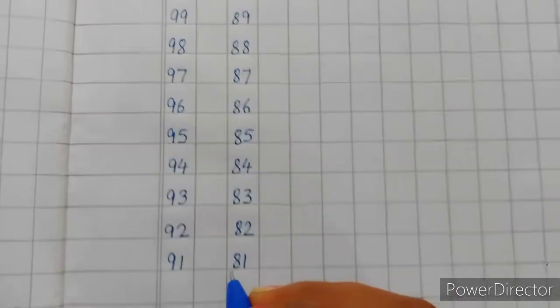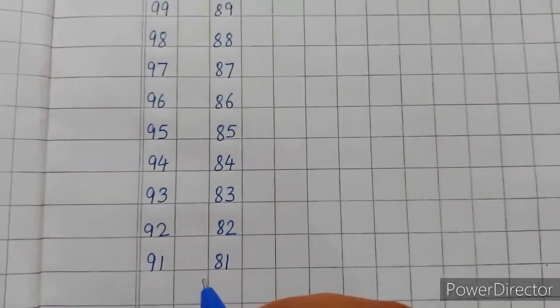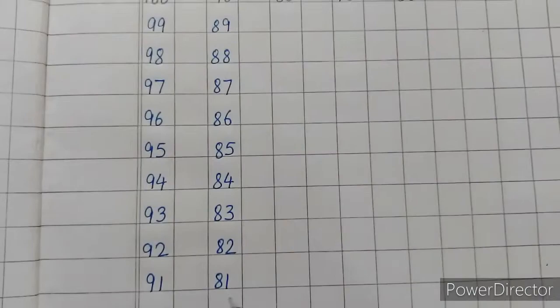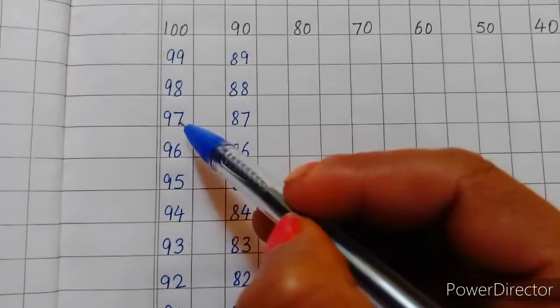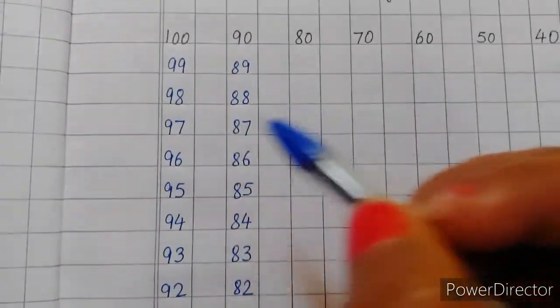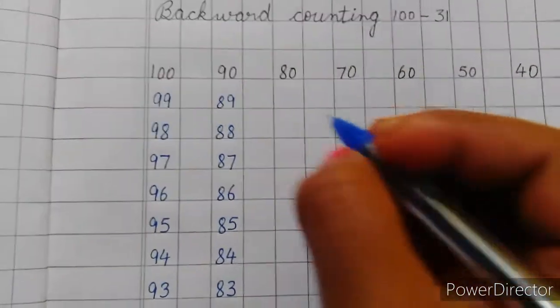81, 81. Now 8, 81 hai. Abhi kya aayega? 8, 0, 80. Aur dekho, 8 se pehle kya hai? 7. To abhi kun si line aayegi? 7 ki? 8, 0, 80.